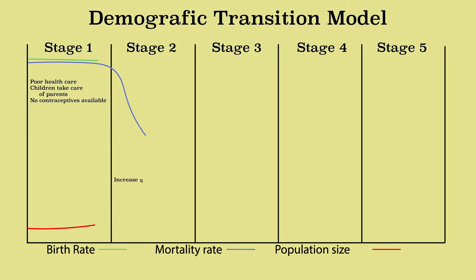When a country starts to develop, the quality of healthcare increases. People are being vaccinated, and better doctors and more hospitals become available. This reduces the mortality rate. This is phase two. Because the birth rate still remains high, there is a huge natural population growth, which increases the total population size. The poorest countries in the world meet this description, such as Angola and Chad. It is important for these countries to continue to develop so that the population growth will decline.